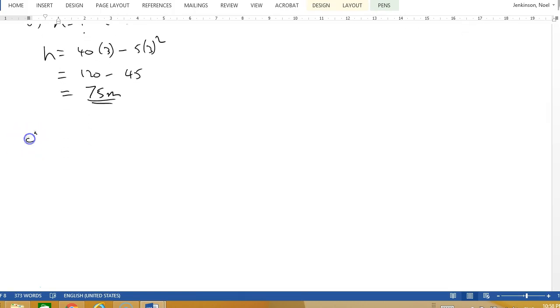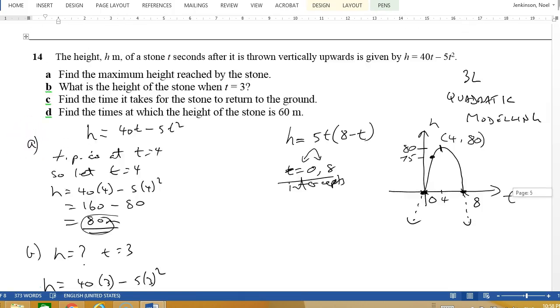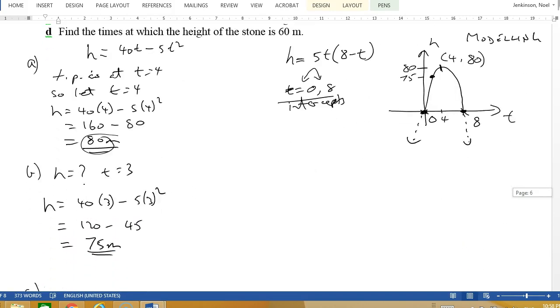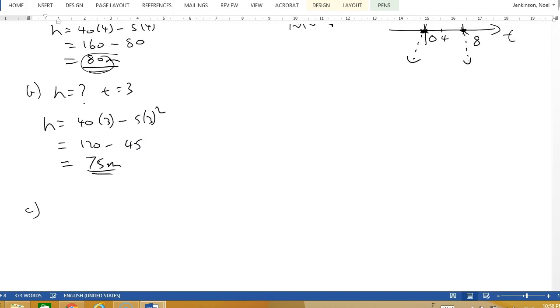Then we're going to part C. Part C says find the time it takes for the stone to return to the ground. The stone is returning to the ground over there. Looks to me like it's 8 seconds. We've already calculated that.